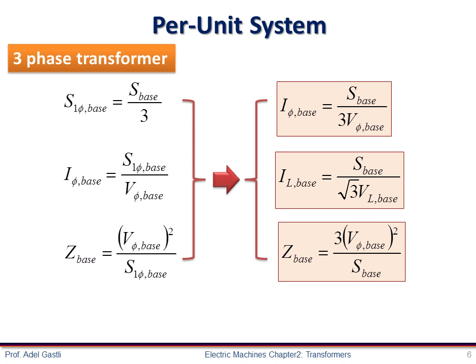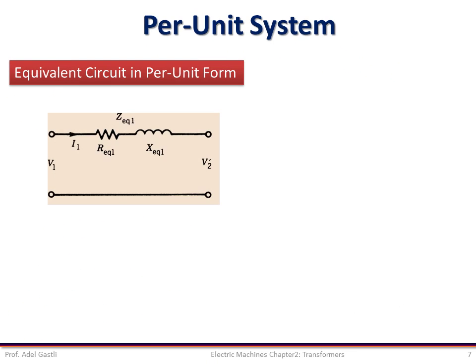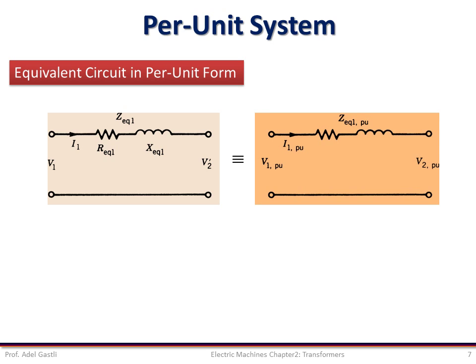Hence, we can deduce the three phase system base current, voltage, and impedance as shown by these equations. The equivalent circuit of a transformer referred to the primary side is shown in this figure. The equivalent circuit in per unit form is shown here.